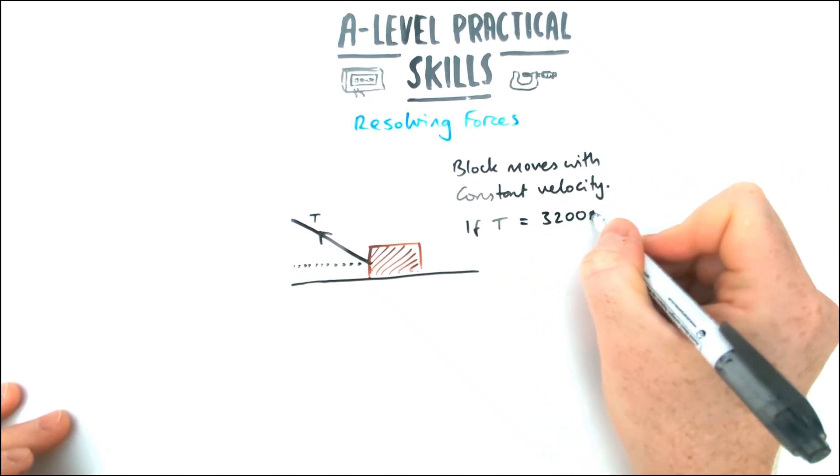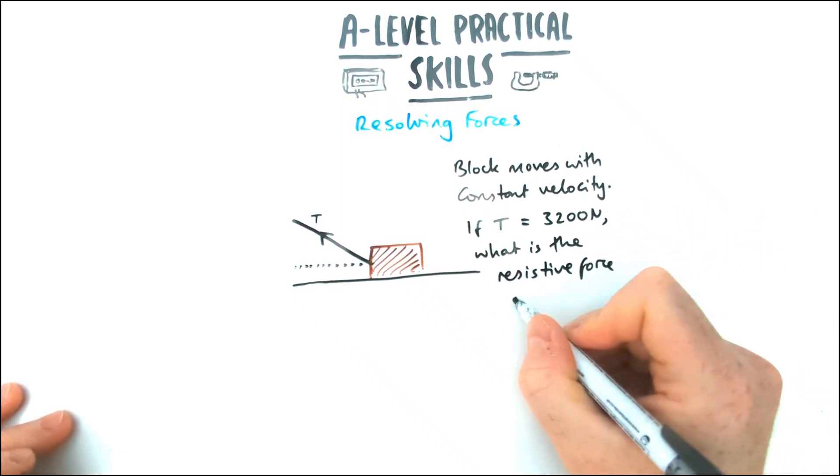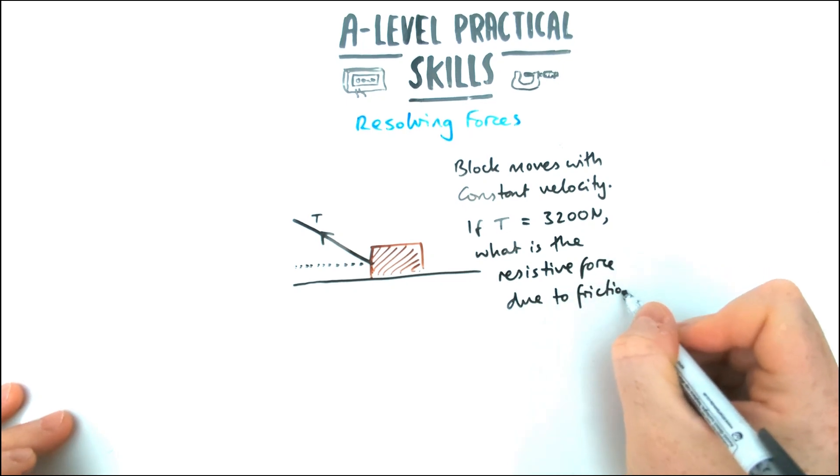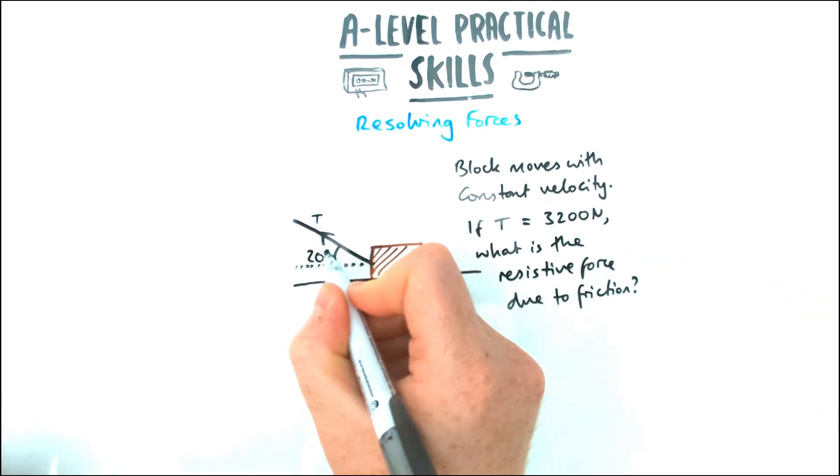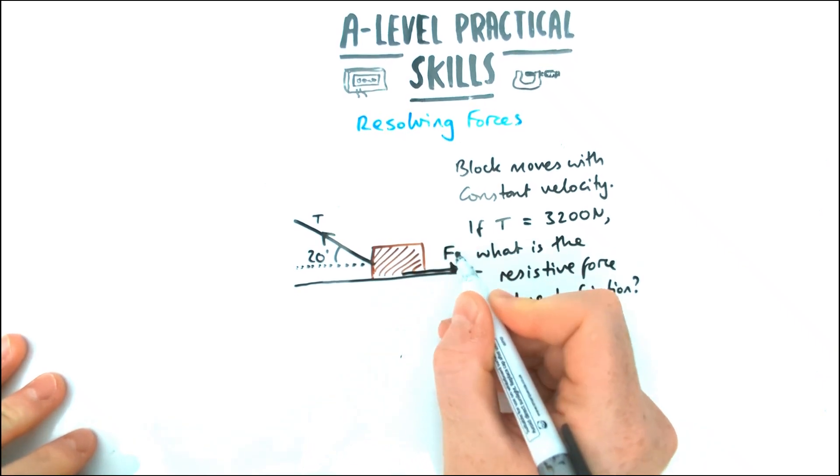Let's have a look at an example. I've got a block which is going to be dragged along the surface at a constant velocity, and it's going to be dragged along by a rope that's got a tension which is 3,200 N here. The question is, what is the resistive force due to friction on the block?